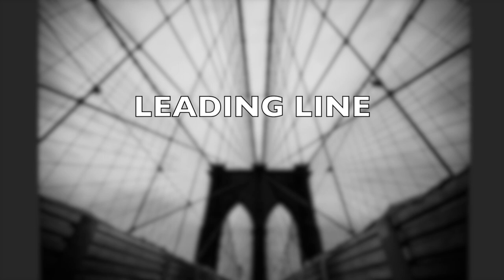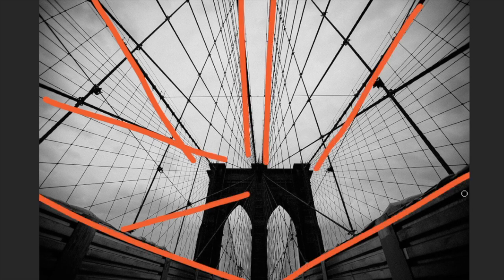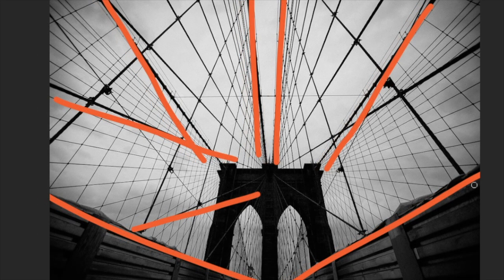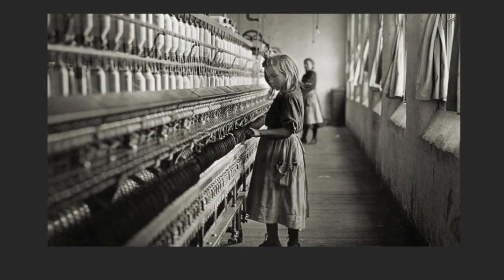A leading line is a very commonly used technique to draw the viewer's attention towards the subject matter. In this case there are multiple lines moving in towards the center. This image is using diminishing perspective as a method of producing leading lines. Diminishing perspective takes advantage of the fact that objects closer to the lens have a broader proportion, and this diminishes with depth. This famous Lewis Hine picture really uses the diminishing perspective in order to draw our eyes to the young girl working in the cotton mill.